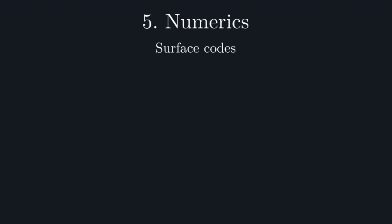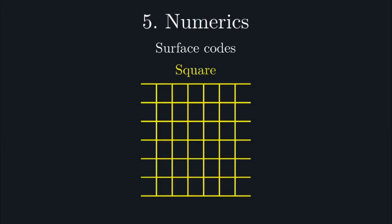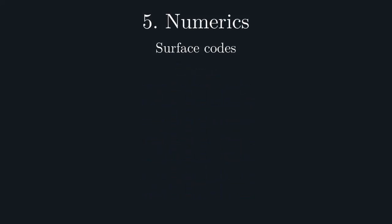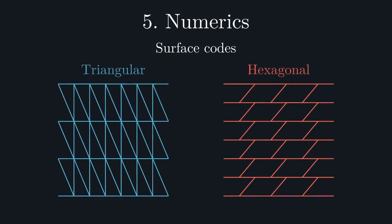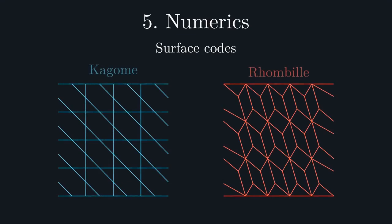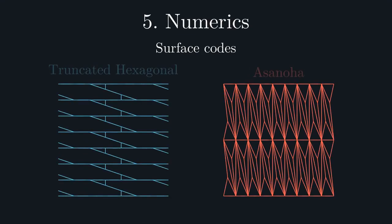As a test, we start with the surface code defined on the square lattice. We then consider three dual pairs of lattices. The first being the triangular and hexagonal lattices. The second being the Kagome and rhombic lattices. And then finally, the truncated hexagonal and Asanoa lattices.